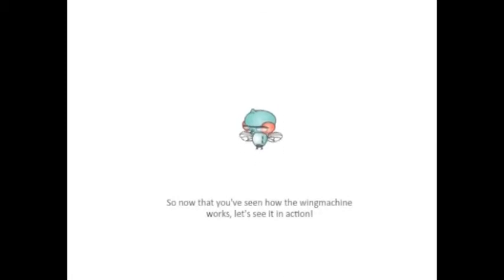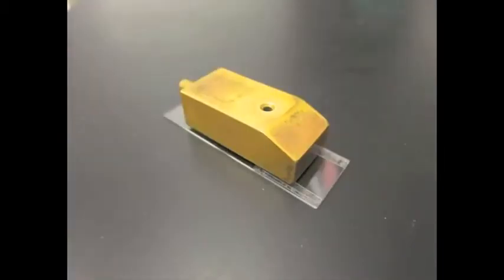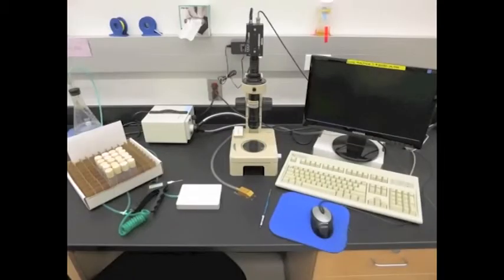So now that you've seen how the Wing Machine works, let's see it in action. We have the parts to make our Wing Machine. We've assembled it. Now we need to set up our station.